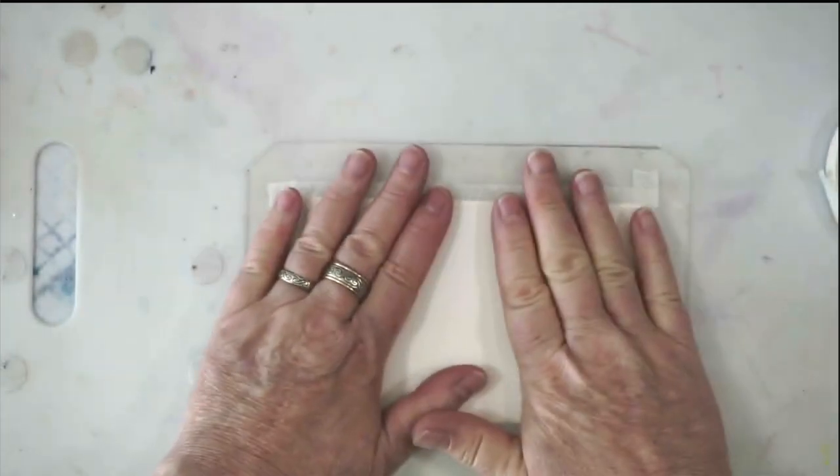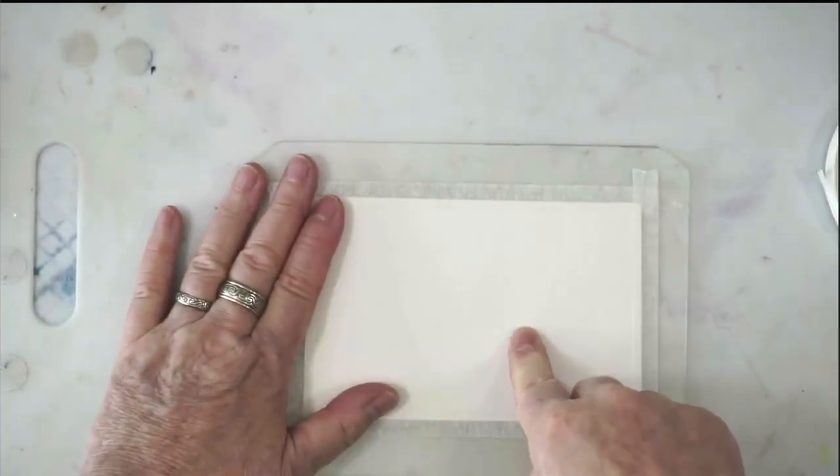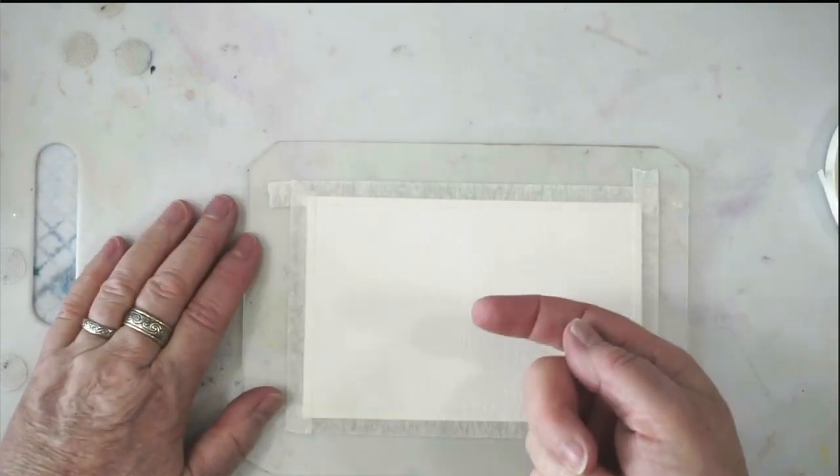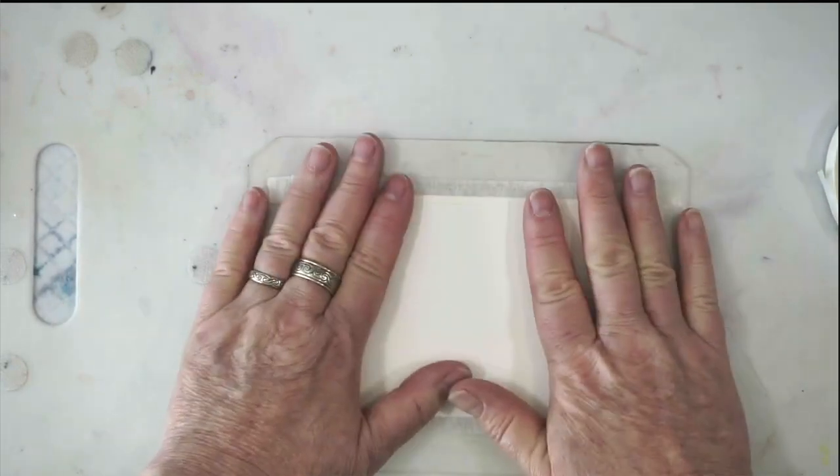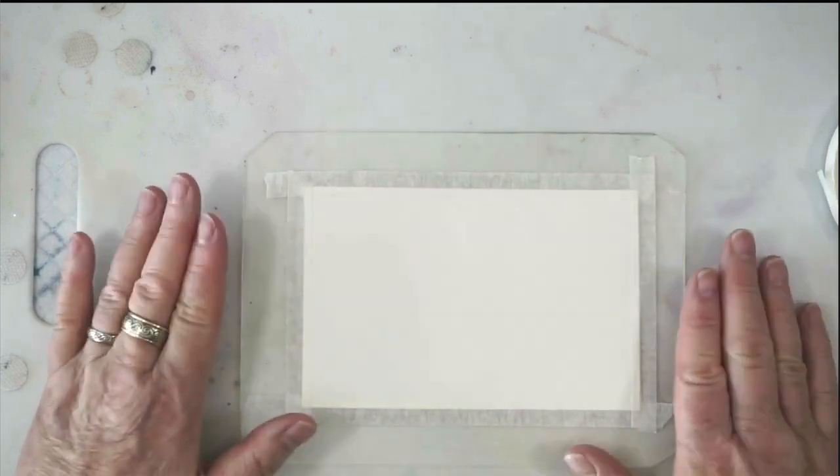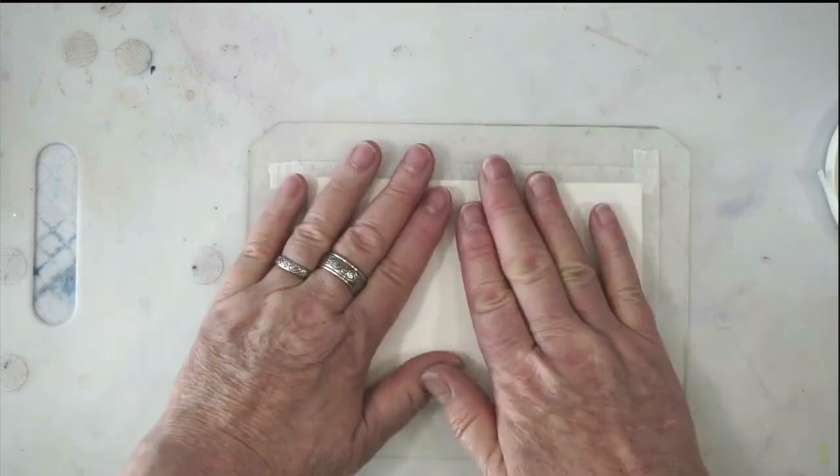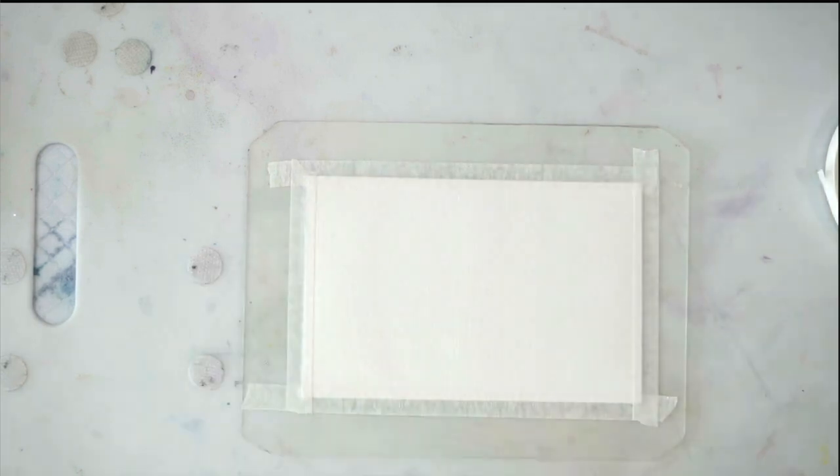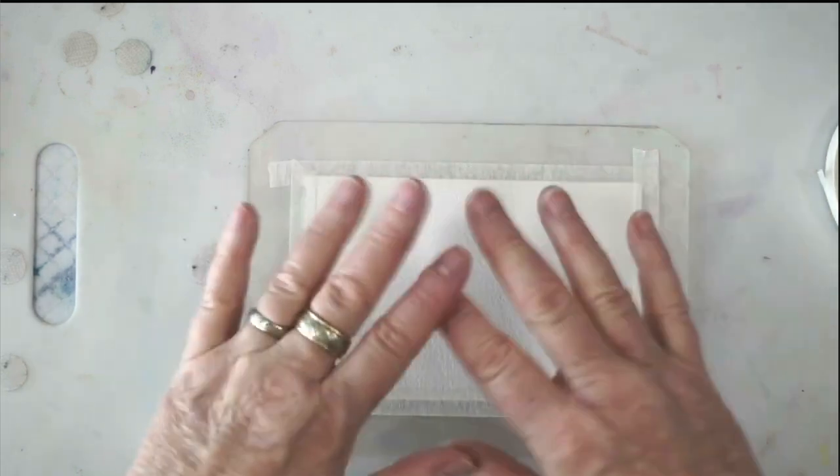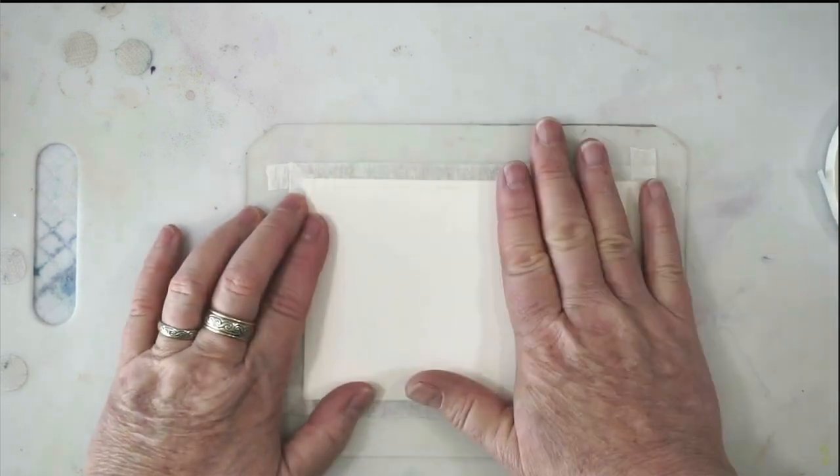That moisture has to move all the way through the paper and out the front side to evaporate. So even if you've dried it with a hairdryer, if that condensation is on the backside, there's still moisture that has to make its way through the paper layers to the front side. If you're using a hairdryer, I suggest you dry until it feels completely dry and then let it sit for a minute or two and then dry it some more until it feels completely dry.